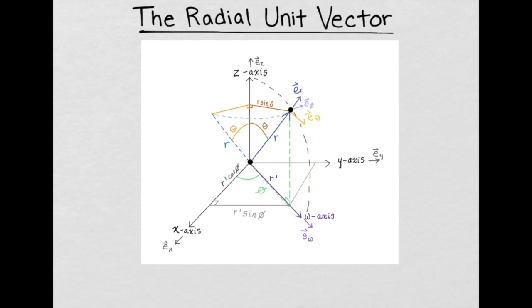It's possible to use trigonometry to express the radial unit vector in terms of other coordinates.